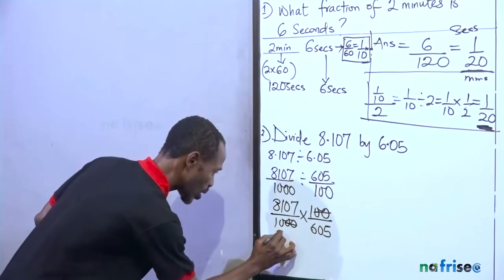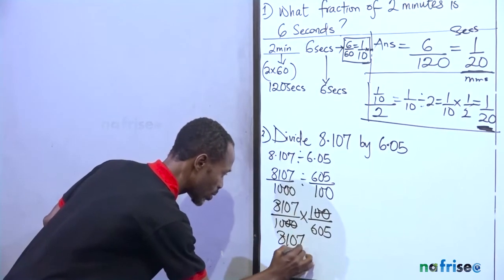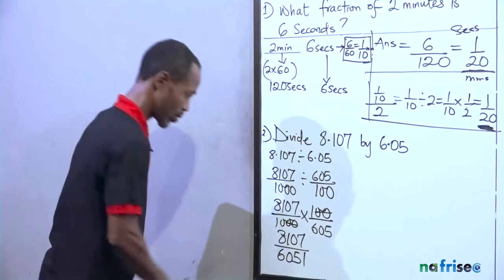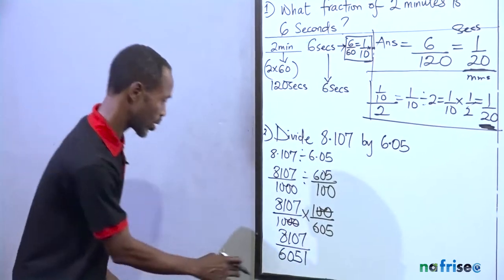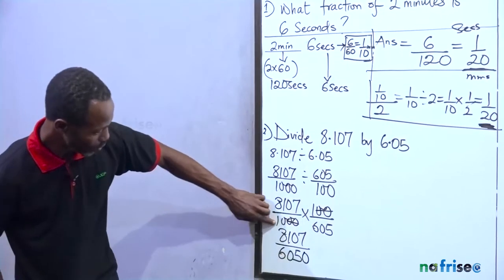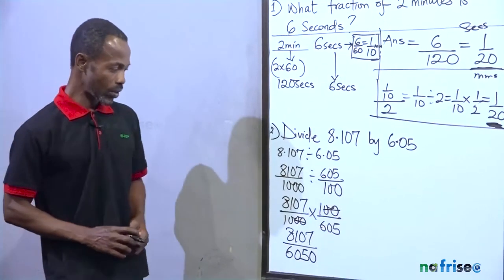it becomes 8,107 over 1,000 times 100 over 605. So what do we have? These two zeros, we cancel these two zeros. So that means this is going to give us 8,107 over 605, 1. No, 6,050. This last 10 will have to multiply 605.